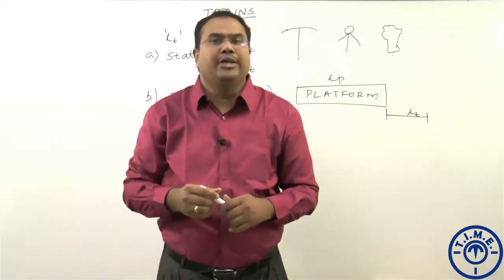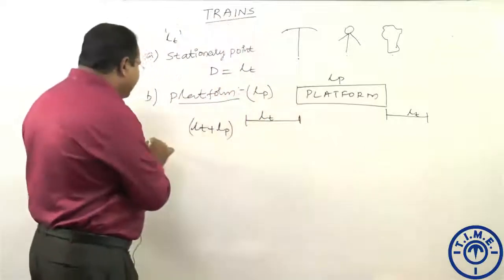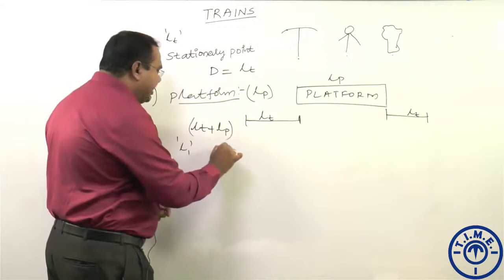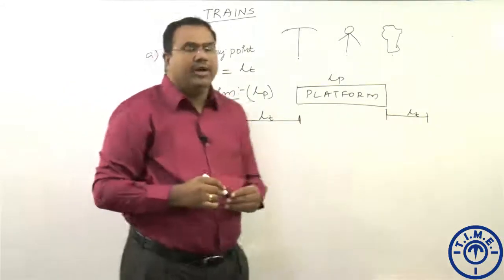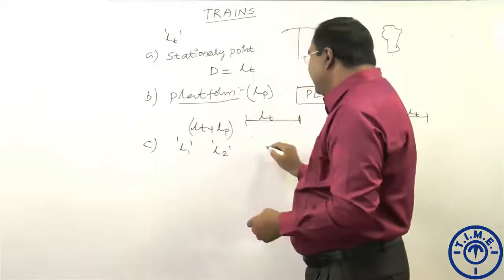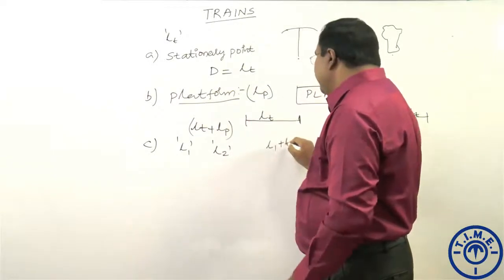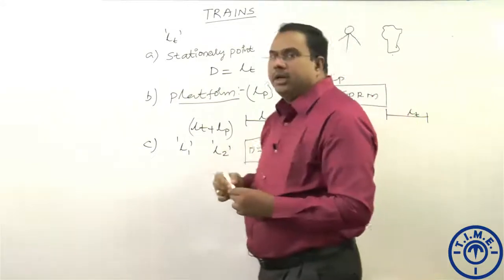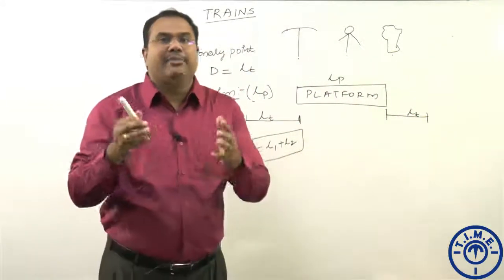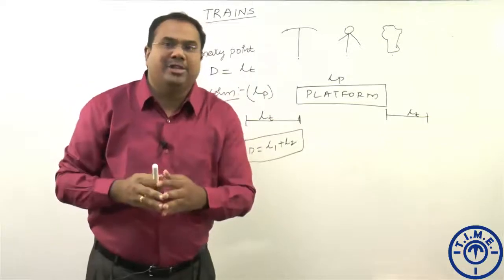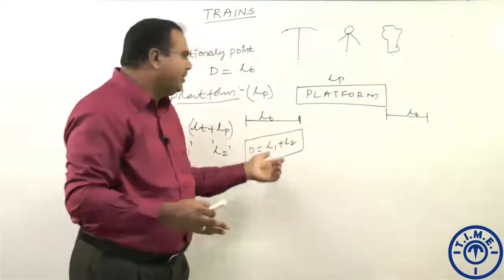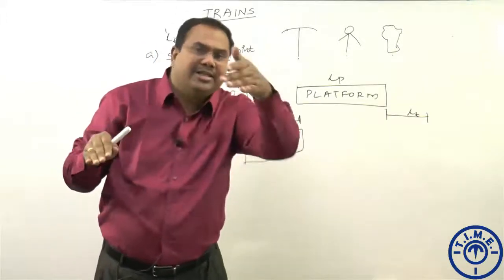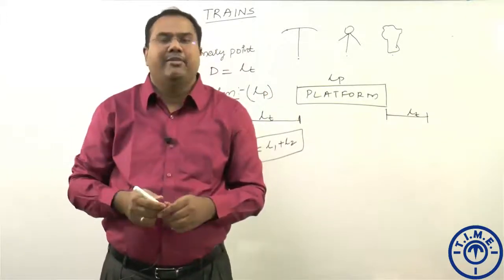The third case is when two trains are crossing each other. If the lengths of the two trains are L1 and L2, the distance covered is L1 plus L2, regardless of whether they are moving in the same direction or opposite directions. The distance always remains L1 plus L2.